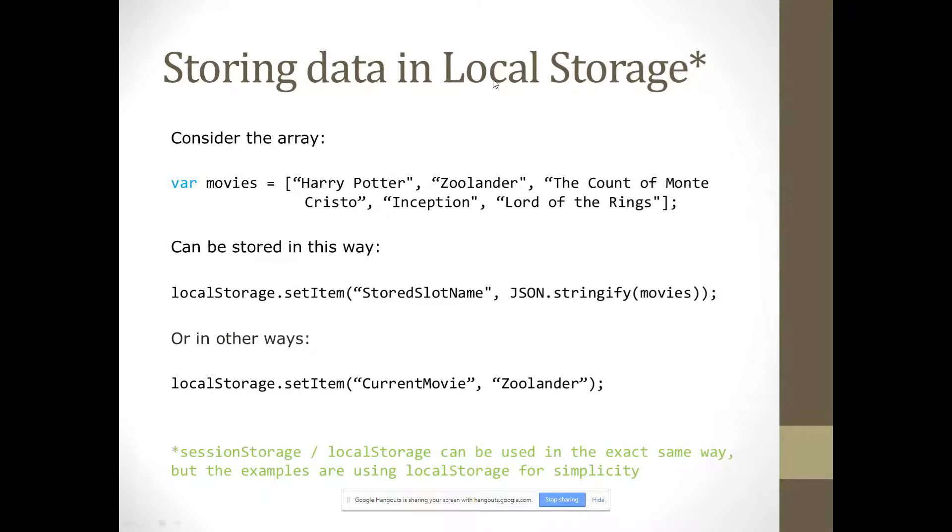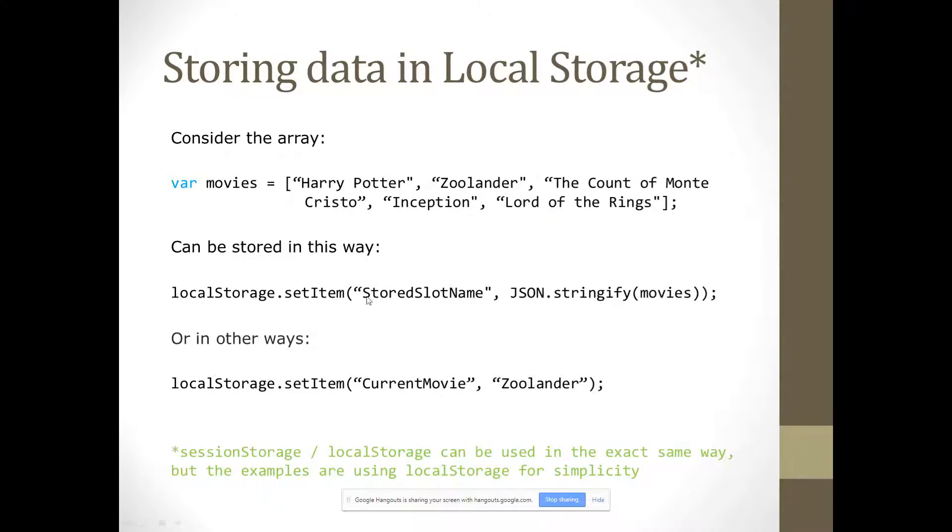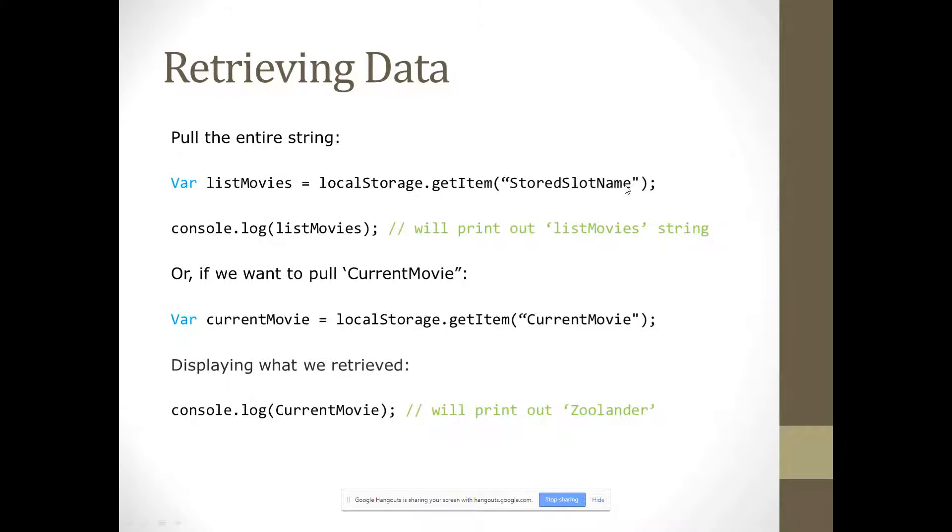So if we want to, we've now stored that local data, we can store it in these ways, but if we want to pull that data, we can make a variable. Like, variable list movies, if we want to make a list of all the movies, localStorage.getItem, and then we put the name of that variable. So, back here we called it stored slot name, because I couldn't think of a better way. And then, so there's our stored slot name.